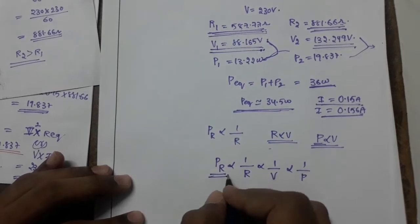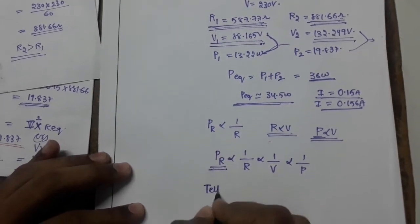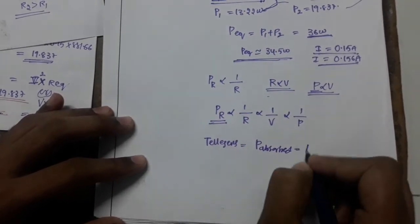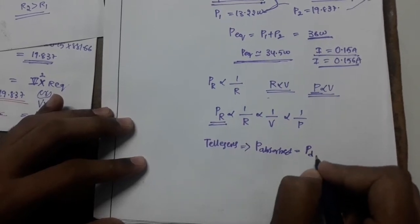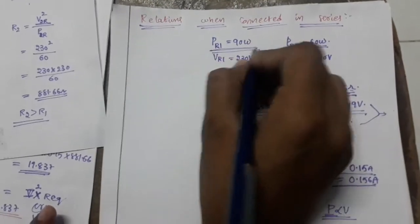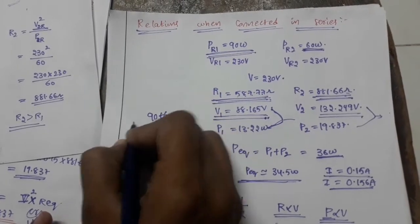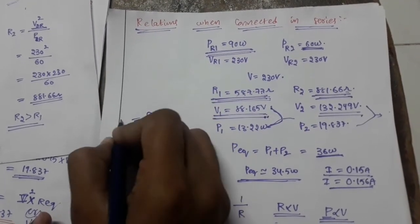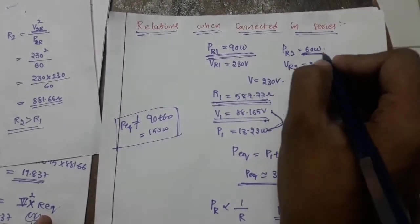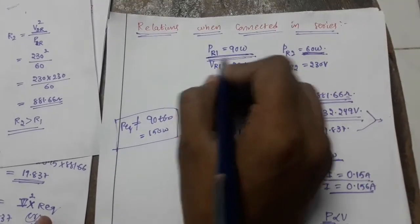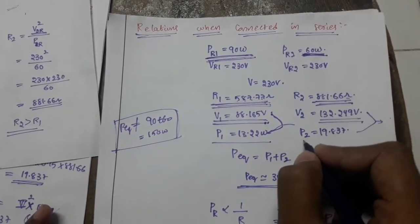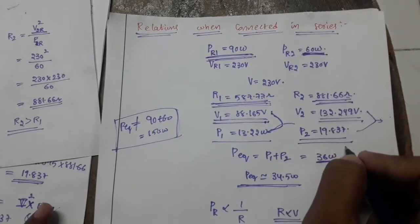This is the power rating of the bulb. By Tellegen's theorem, power absorbed equals power delivered. Please don't add the ratings directly — 90 plus 60 equals 150 — this is not the equivalent power, because these are not the actual power drawn by the bulbs; these are only the power ratings. The actual power drawn by bulb 1 equals 13.22 watts and actual power consumed by bulb 2 equals 19.837 watts.